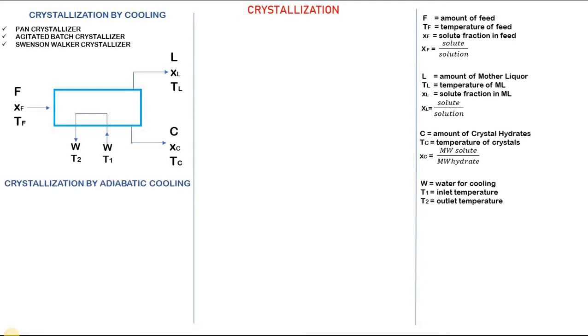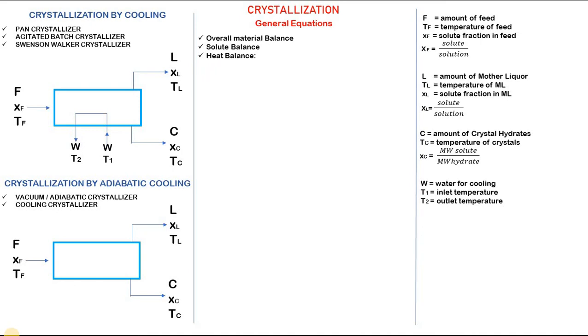The difference with crystallization by adiabatic cooling is that no cooling water medium is present. Some examples of equipment are vacuum crystallizers and cooling crystallizers. These are the equations for crystallization by cooling: we have overall material balance, solute material balance, heat balance, and enthalpy balance.